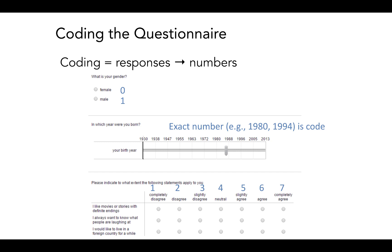The last example is one where you have a Likert scale. Please indicate to what extent the following statements apply to you. And then you have a couple statements such as I like movies or stories with definite endings, I always want to know what people are laughing at and so on. Each of these statements is to be answered on a scale from one to seven, one being completely disagree, seven being completely agree. So let's say you fill in this questionnaire as a respondent and you read the first statement. I like movies or stories with definite endings. If you were to ask me, I would disagree because I kind of like the unknown and open ended movies and stories. So let's say disagree. I would give myself a two. So in that case, I would circle the second little answer option, which corresponds to code number two.